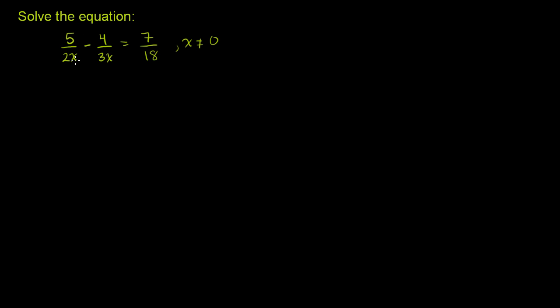Solve the equation: 5 over 2x minus 4 over 3x is equal to 7 over 18. And they tell us that x can't be equal to 0, because that would make these two expressions here undefined. Hopefully the answer here is not 0, and then this becomes just kind of extra unnecessary information. So let's figure out how to solve this.